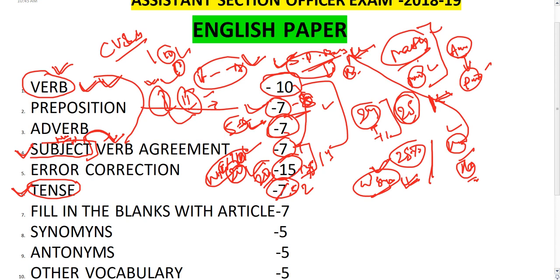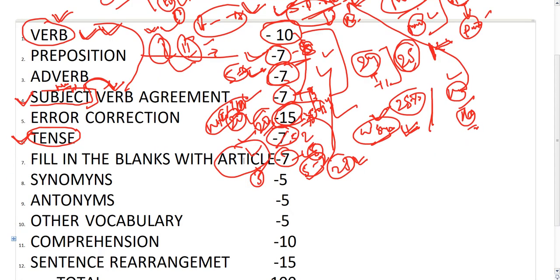Part one covers various tools and part two covers different phrase types. These seven to eight marks are very achievable if you focus on subject-verb agreement and error correction. With proper preparation, you can score five to six additional marks from fill in the blanks with articles.